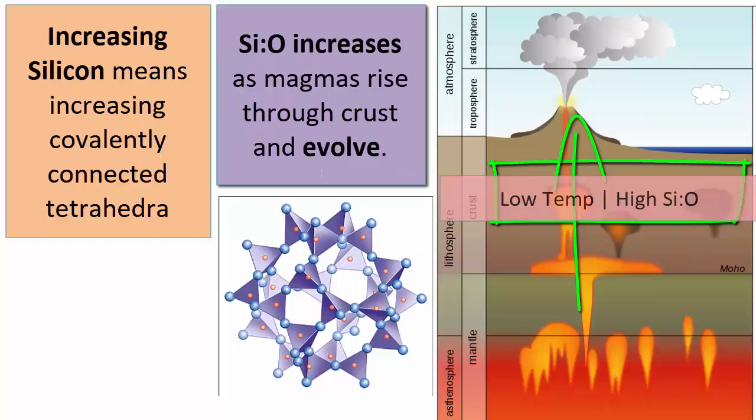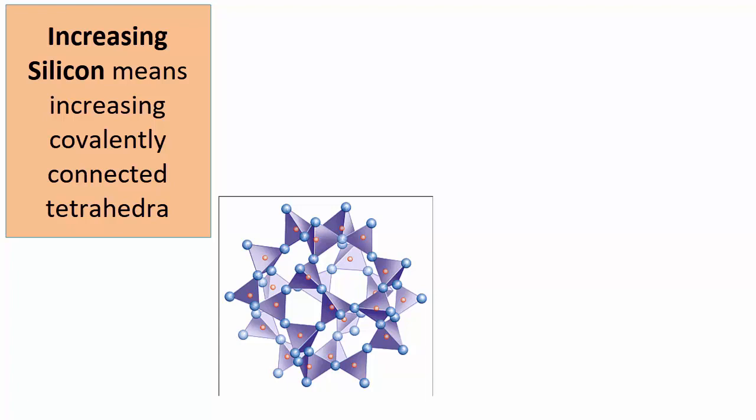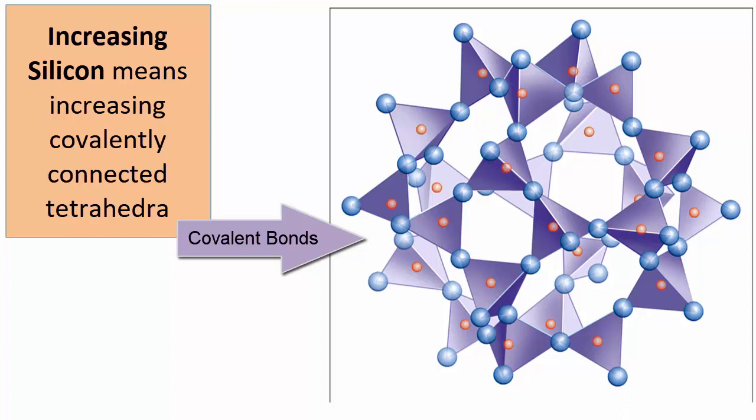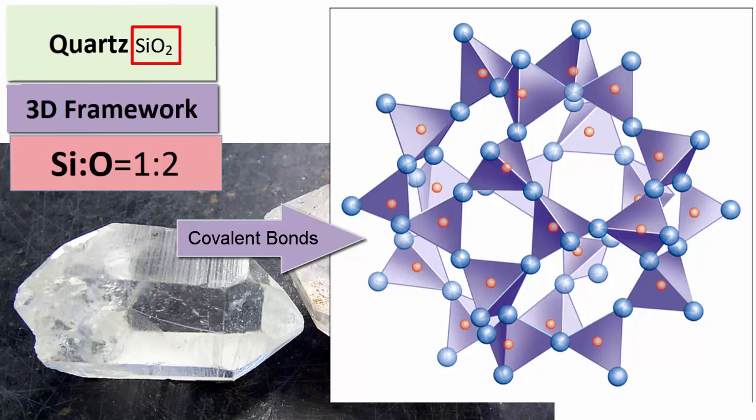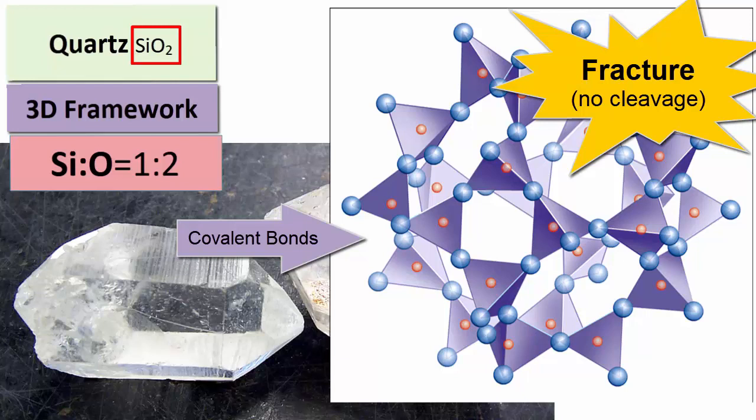The last arrangement of silicon-oxygen tetrahedra, which occurs with the largest concentration of silica in the most evolved magmas, is the three-dimensional framework. In this arrangement, every oxygen in every tetrahedron is sharing itself with another silicon in an adjacent tetrahedron. The ratio of silicon to oxygen is 1 to 2, and in its pure form, its chemical formula is SiO2, and the mineral is quartz. There are no ionic bonds. All oxygens are satisfied through covalent bonds with silicon, and none of these bonds align in a plane in the crystal structure, so there is no cleavage. Quartz only fractures, and this is one of its main distinguishing characteristics.